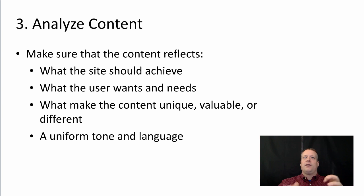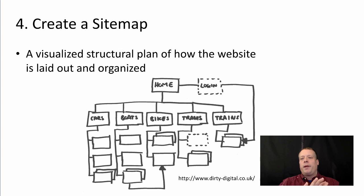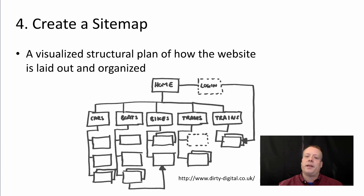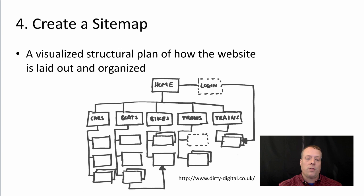So now we have pieces of content and an information architecture but we haven't married them together yet. We have all the research and tools so we know we have the content we need. The next step is to actually take that information architecture and those contents and create an actual site map. A site map is a visualized structural plan of how the website is laid out and organized. In some ways it is the glue of taking the content and the information architecture and putting them together in a way that's physically implementable in a website. You have a home page, different categories underneath, a login option that gets you to other categories or content. A lot of places will even put up snippets of their site map on their website to provide the user with a clear path as to how the site is structured.